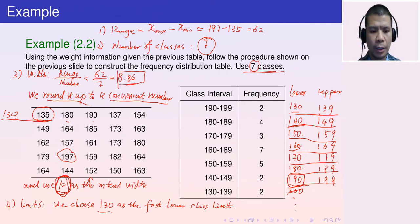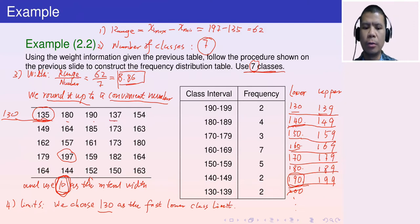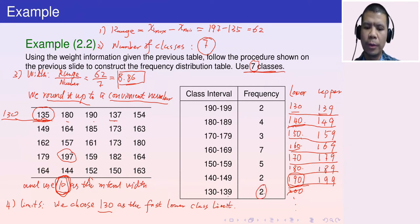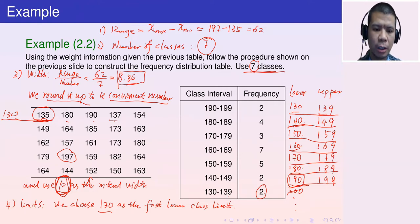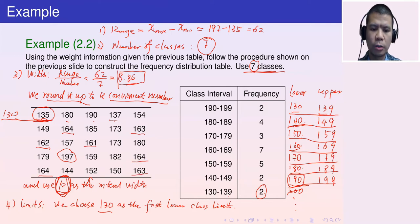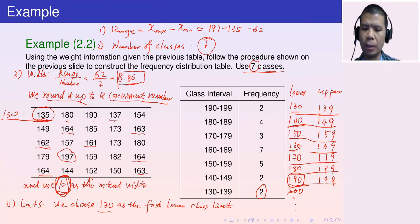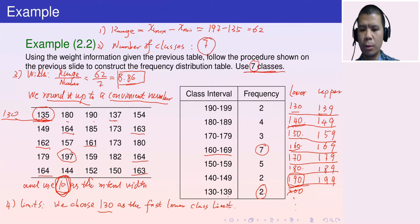Step five: count the frequencies. For the interval 130 to 139, there are two values: 135 and 137, so the frequency is 2. For the interval 160 to 169, the values 164, 163, 162, 161, 164, 164, 163 appear — that is seven values, so the frequency is 7.